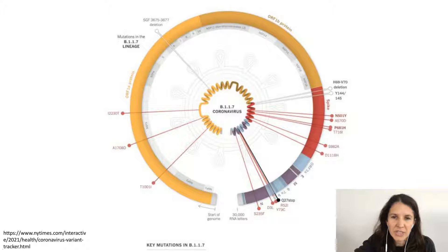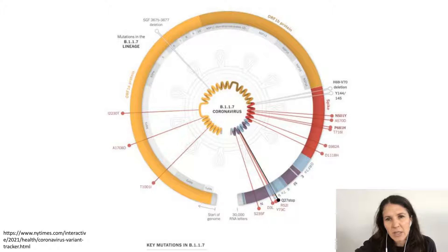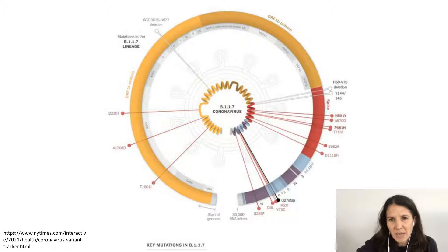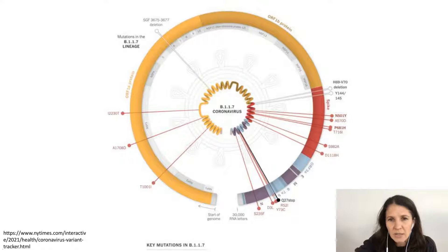The reason why we do this is that the virus changes and mutates over time, and certain mutations fix. This is an image from the New York Times of the Alpha variant of concern, or B.1.1.7. You can see lines coming out from the center circle — those indicate non-synonymous mutations, meaning changes to the nucleotide sequence that have changed the amino acid sequence, which may be functionally important. These lines indicate mutations that have fixed in this Alpha variant of concern.